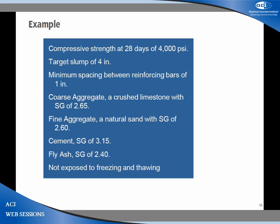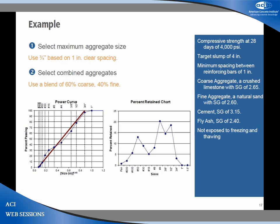Now for an example: design a 4,000 PSI mix, 4-inch slump, 1-inch rebar spacing, crushed limestone coarse aggregate, natural sand fine aggregate, cement and fly ash available, no freeze exposure. Step one: select maximum aggregate size of three-quarters of an inch. Step two: select combined grading using the power 45 chart — drawing a line from the number 200 sieve to the three-quarter inch maximum size — achieving a close fit. The percent retained chart confirms compliance with the 10-to-35 rule, giving a good aggregate grading.